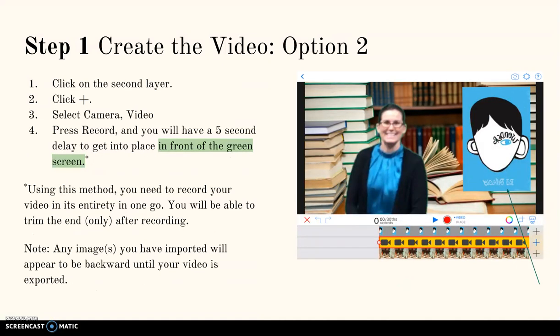Option 2 uses the iPad's green screen app. Click on the second layer, click the plus sign, camera, video. Press record and you will have a 5 second delay to get into place in front of the green screen. This method only allows you to record one video.